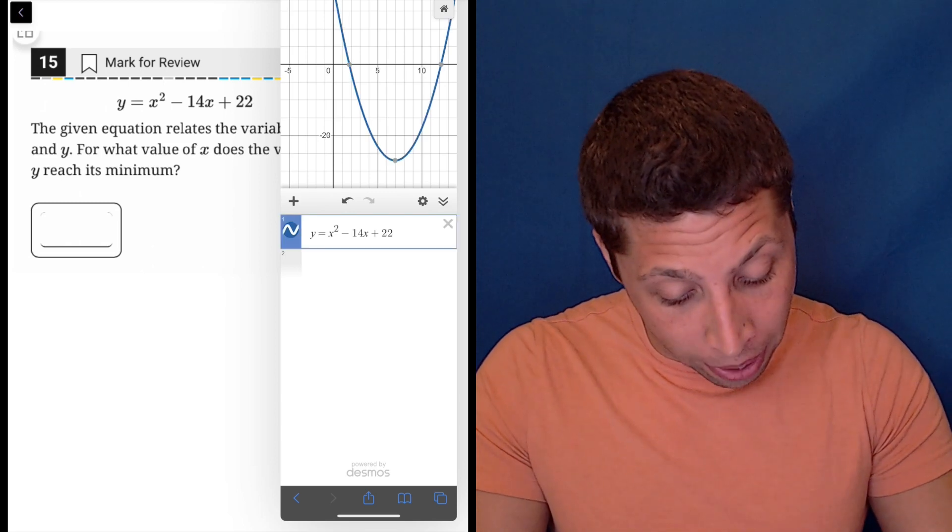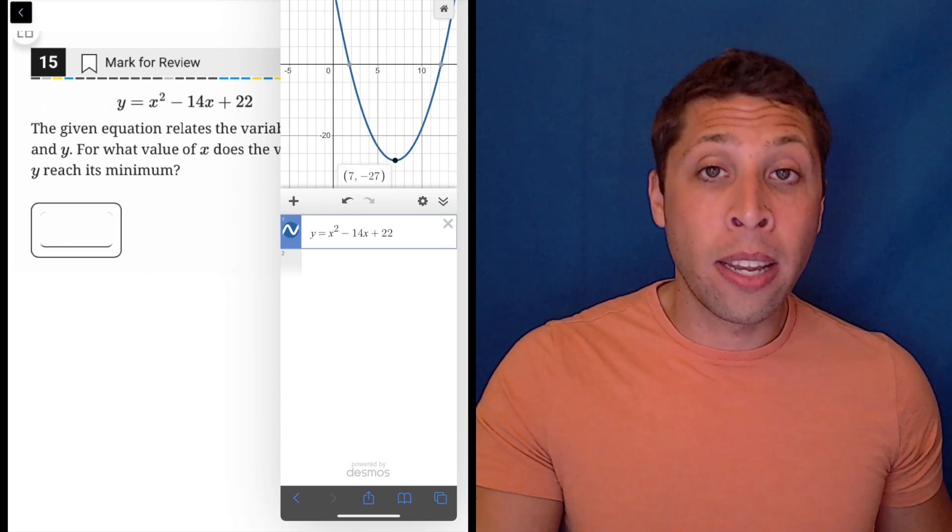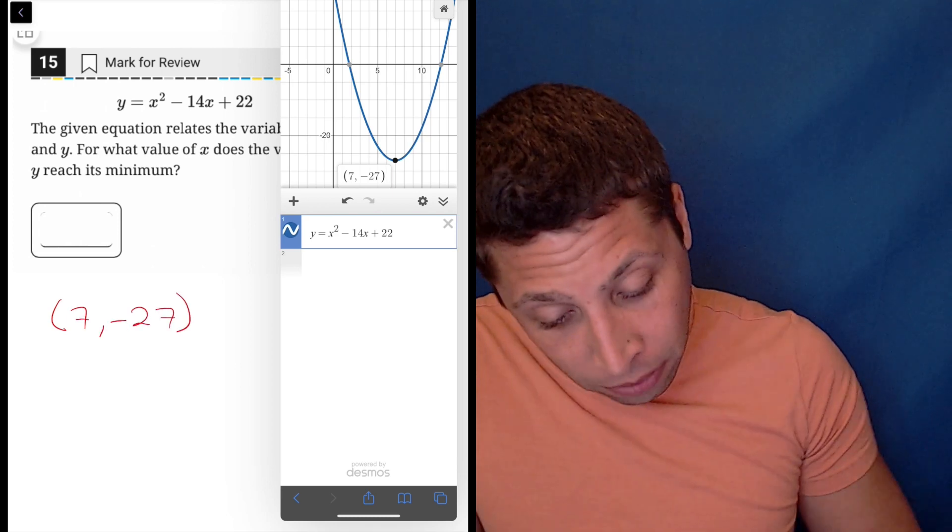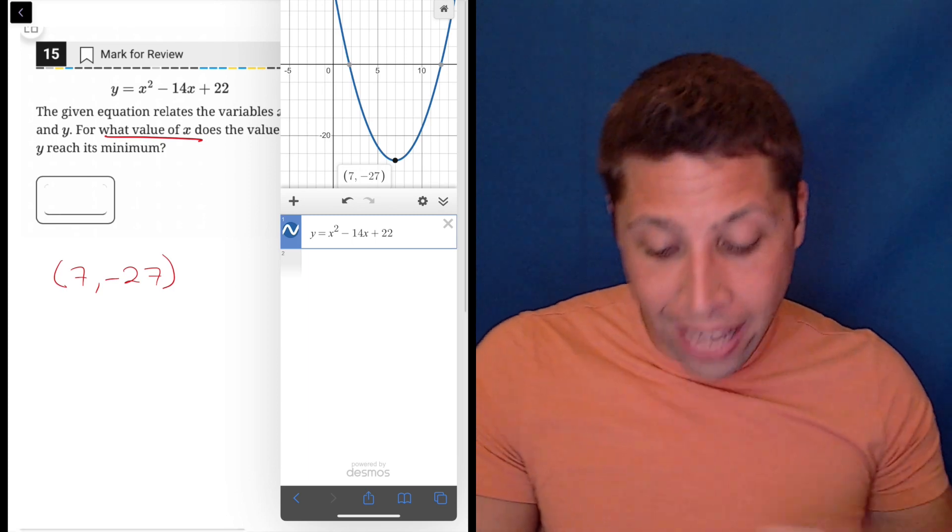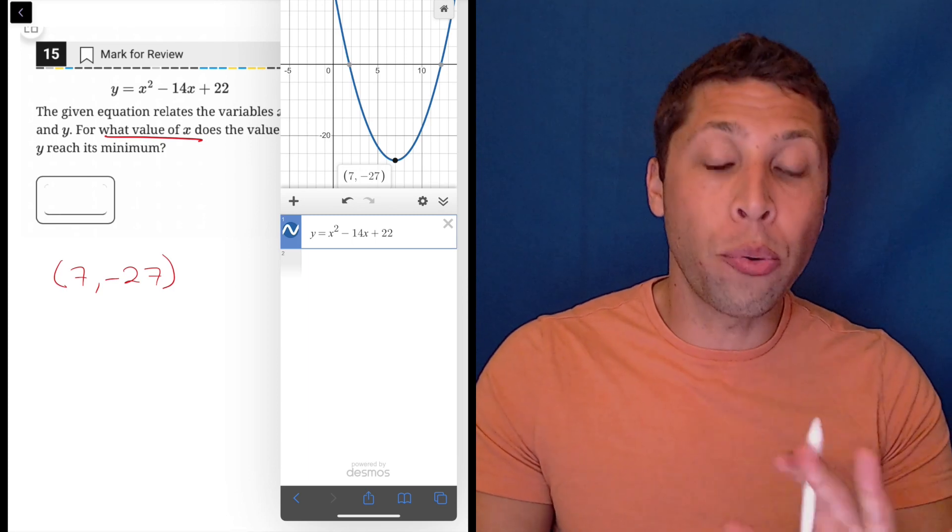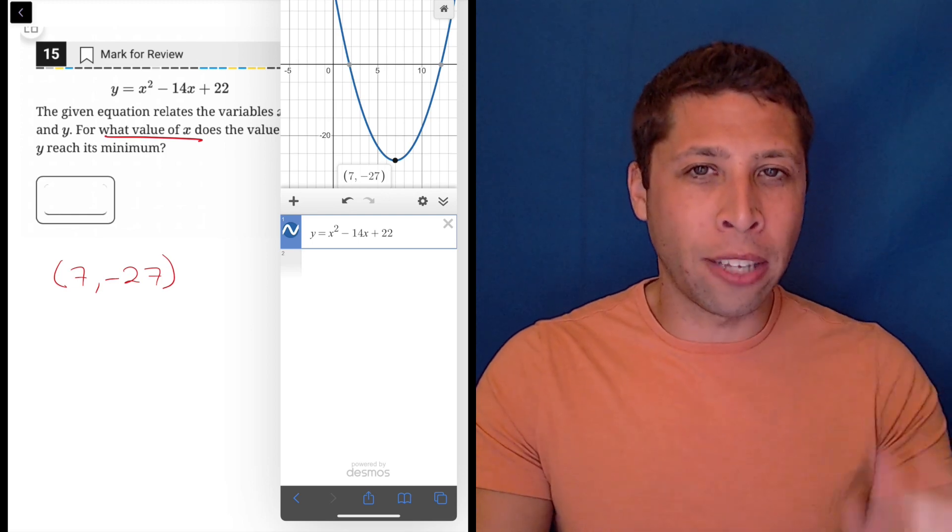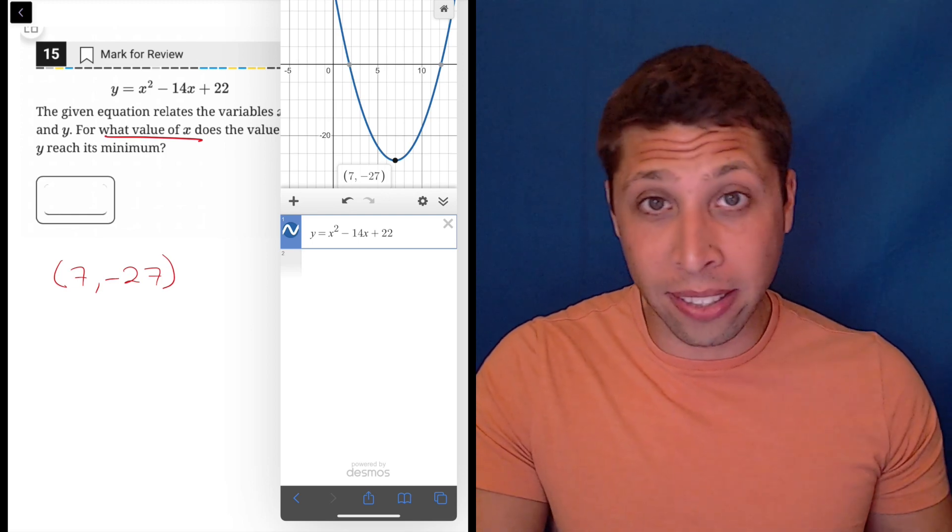And luckily, if we just tap it, we're going to get it. So 7, negative 27 is the vertex. And they're specifically asking us for what value of x does it reach its minimum. So make sure you don't misread the question. They're asking for the vertex, but you only enter one of the points. And they could have asked that slightly differently.